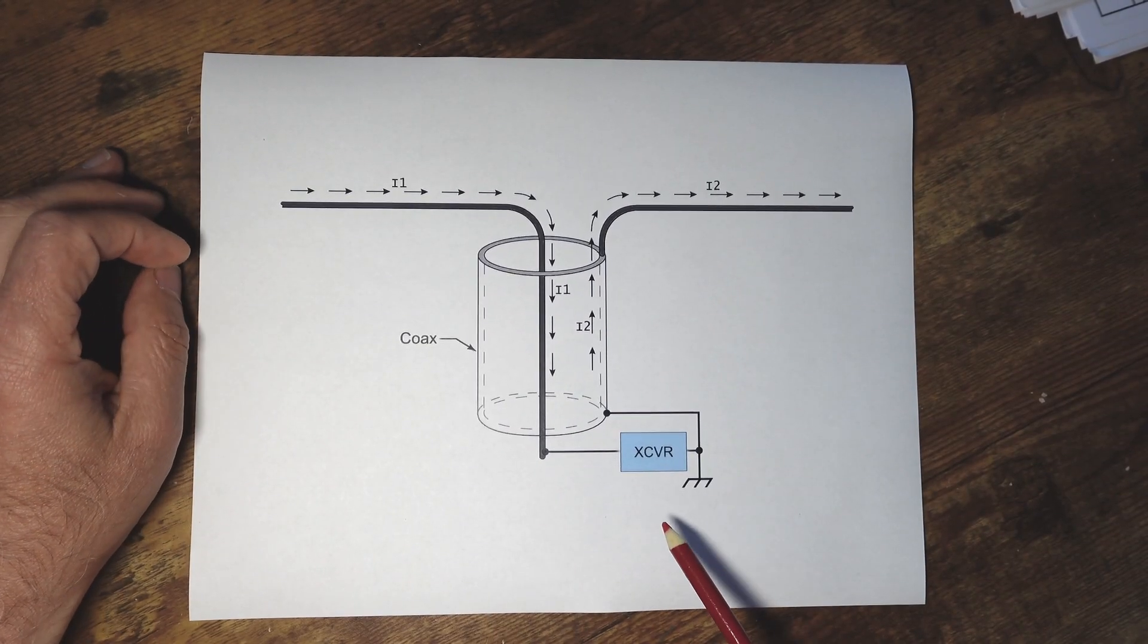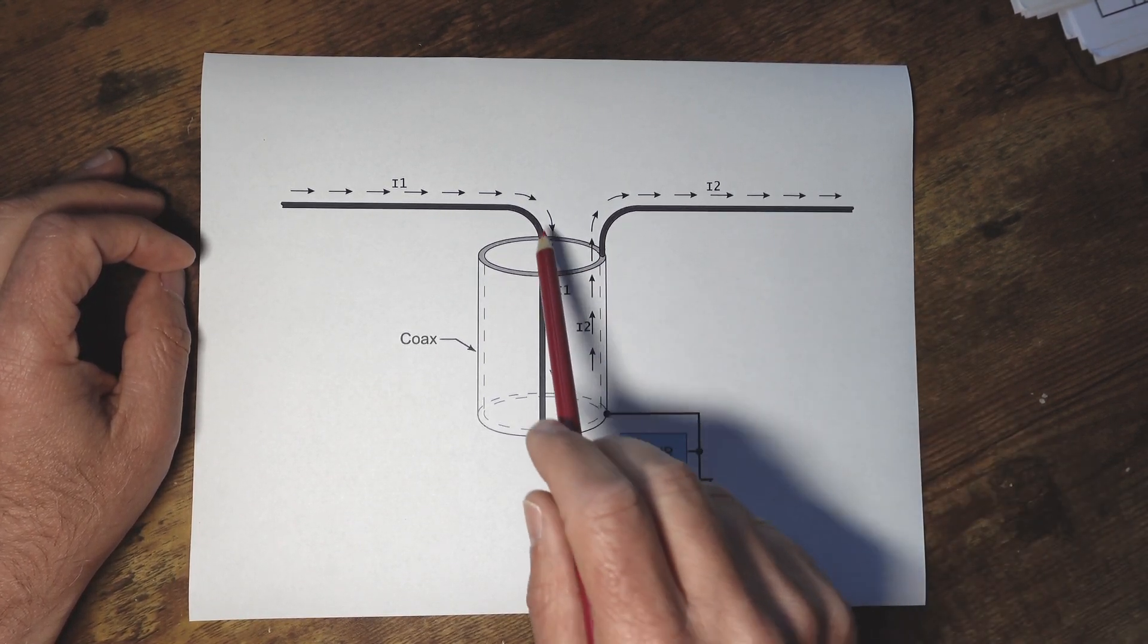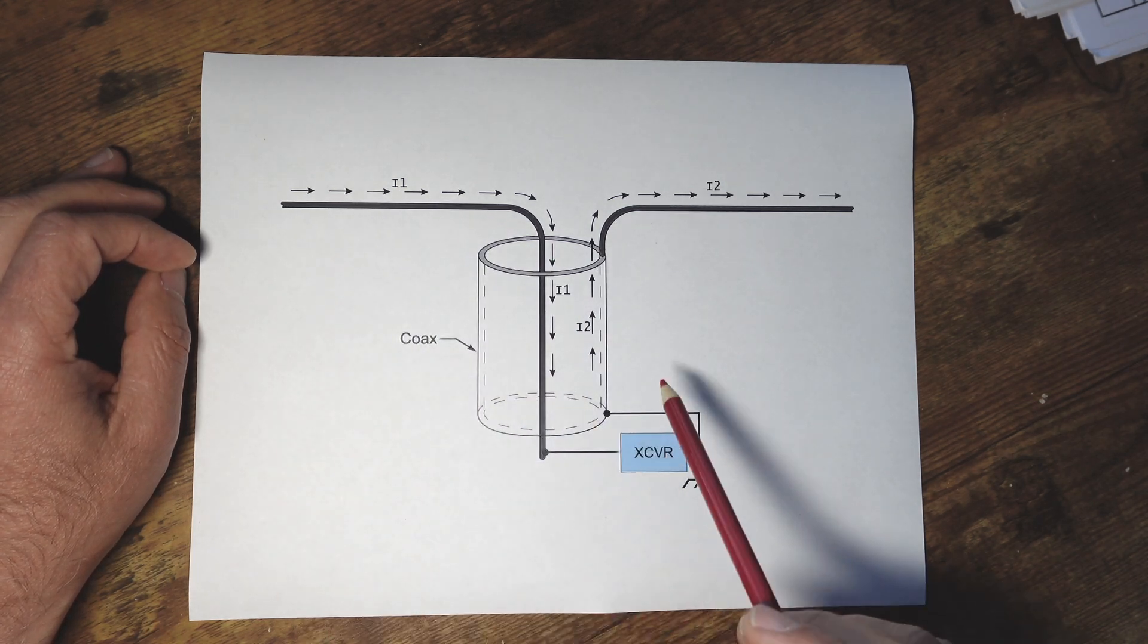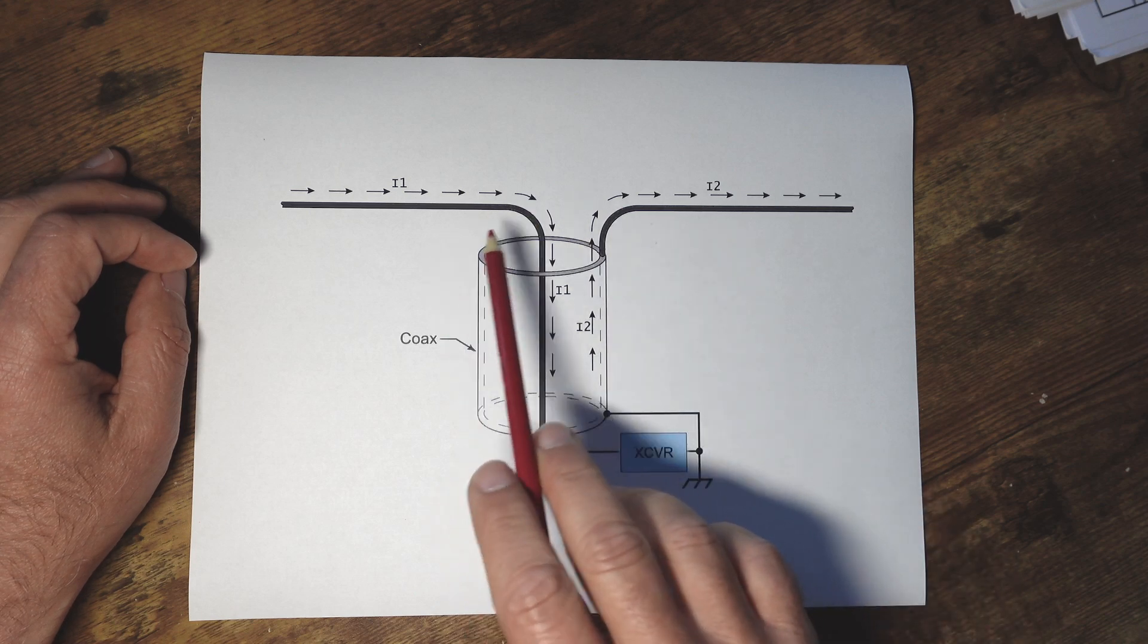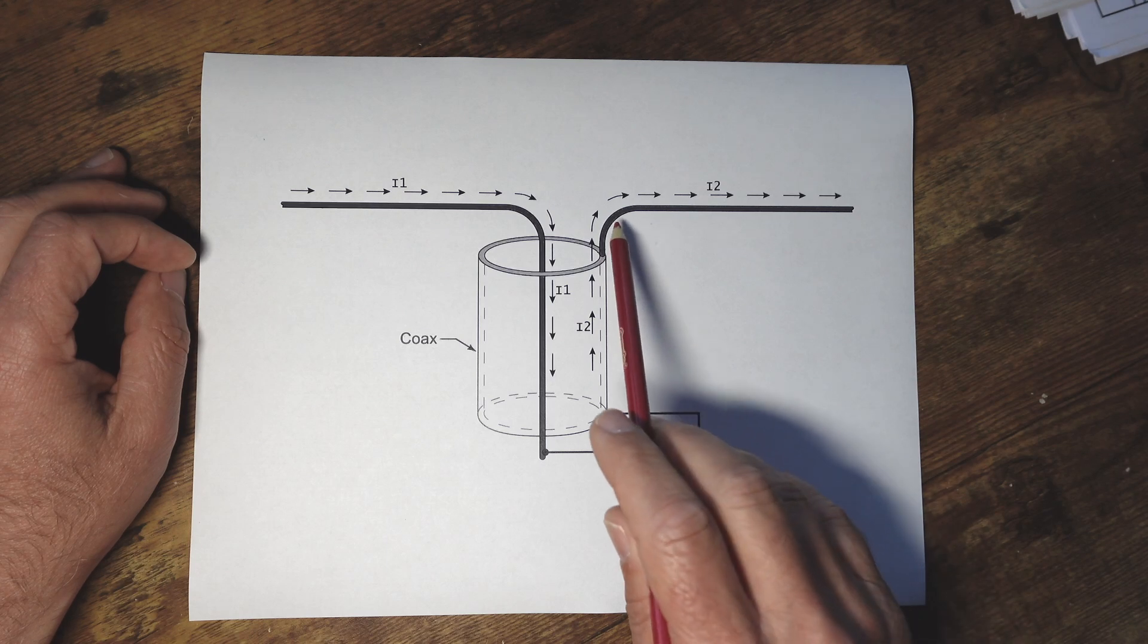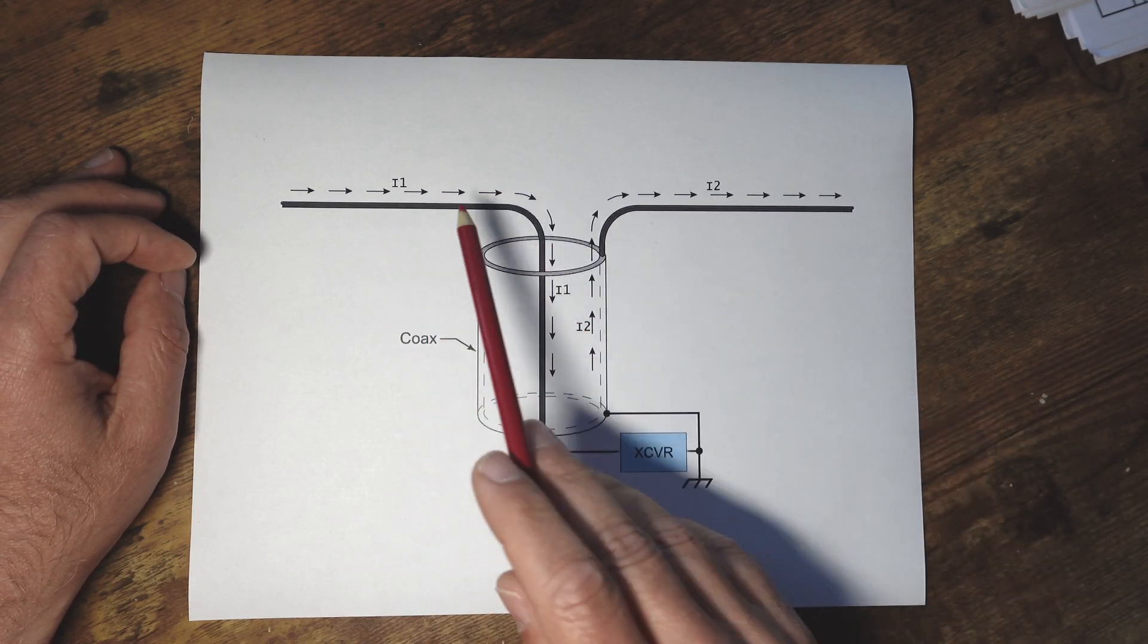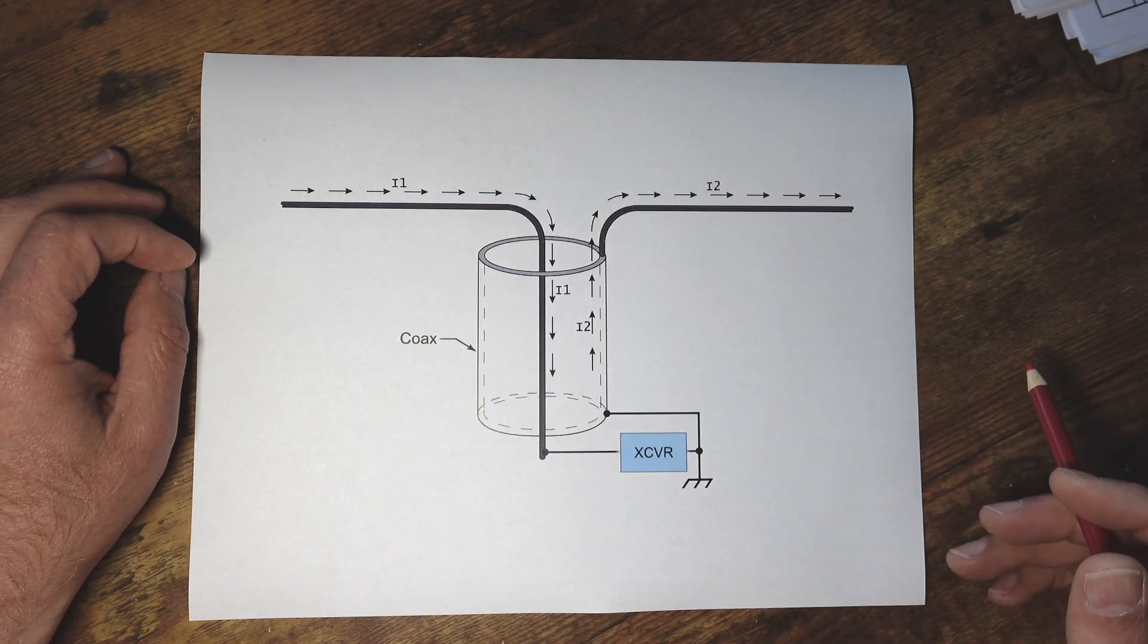So this is an example of an ideal antenna system. This is an example of a dipole with the two wires. The transceiver produces I1 and of course I1 needs to be balanced with I2 because this is a balanced system. In the ideal case, the coax delivers the power to the antenna and then half goes one way, half goes the other way. I1 needs to equal I2 and there's no problem.